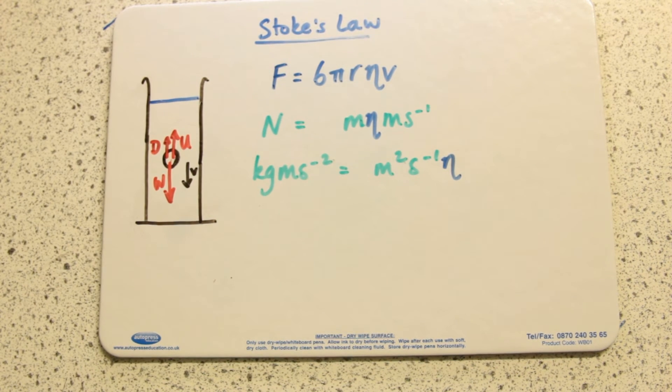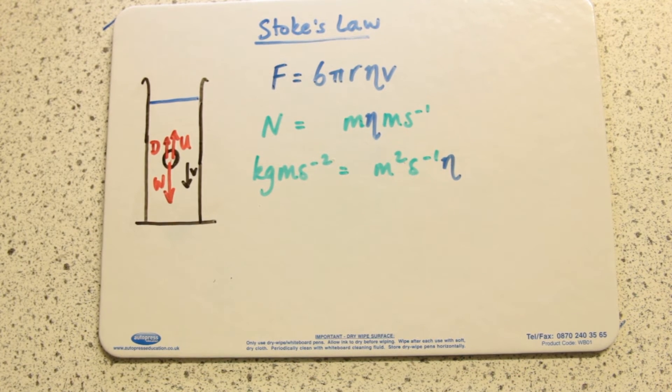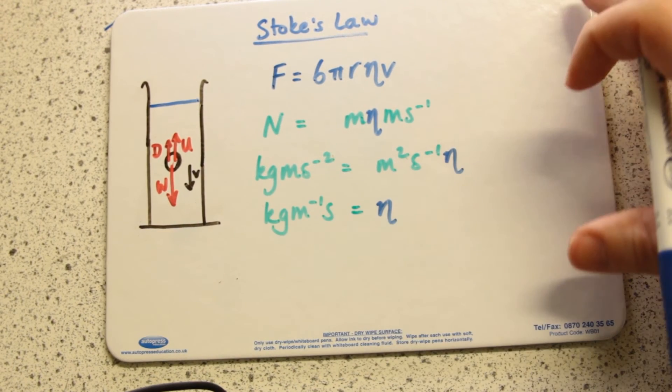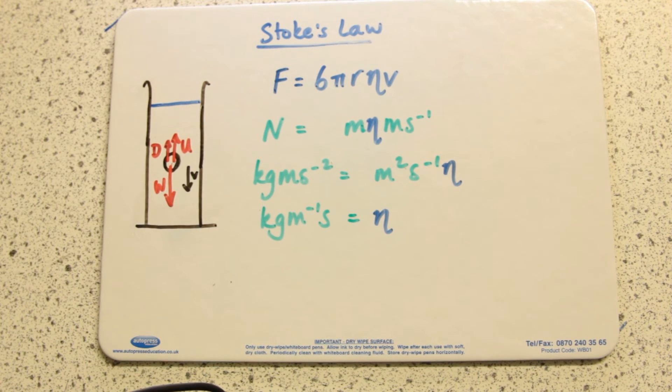We can use dimensional analysis to work out what the units of η are. I've gotten rid of everything which is not a base unit and done simplifying, combining two m's to m². That means a unit of η could be kilogram per meter second.